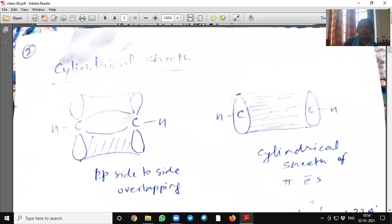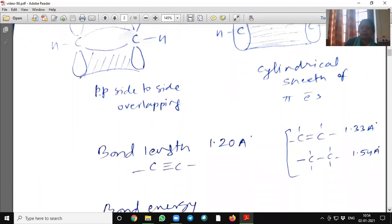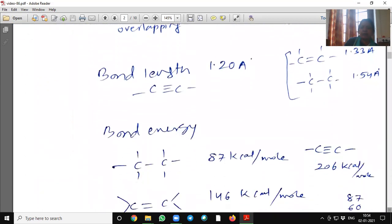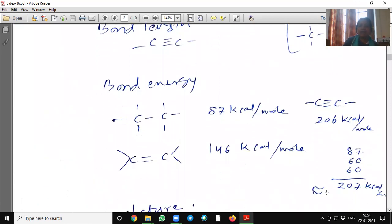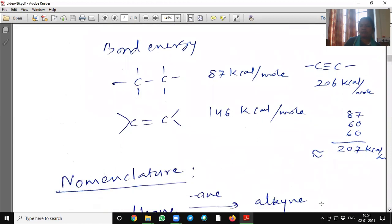This is the cylindrical sheet of this alkynes. It has 1 sigma and 2 pi bonds. So, pi electrons are delocalized in between the carbon-carbon bond. Bond energy, if you will calculate bond energy. Carbon-carbon single bond energy is 87 kilocalorie per mole. Carbon double bond having 146 kilocalorie per mole.